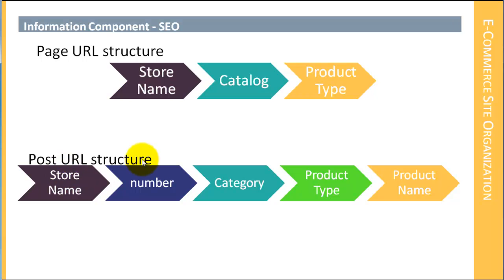For our post URL structure, there's going to be a little bit more additional information. We're going to have the store name again, then there will be a number — and the purpose of this number is to increase the performance of WordPress as it sorts through the different posts and pages. This number helps WordPress index content, so we're going to leave a number in that place. The next thing will be the name of the category that the product is in, then the name of the product type within that category, and then the product name itself.